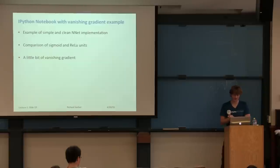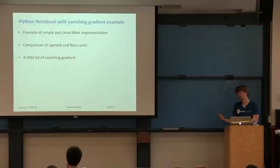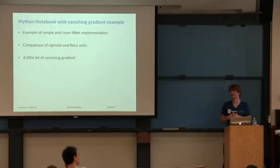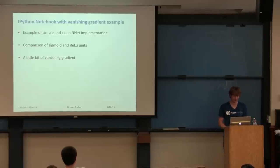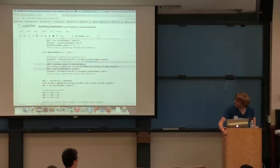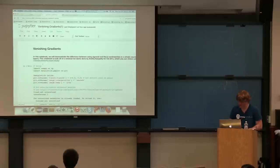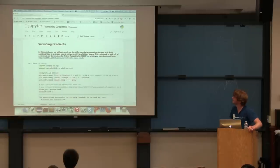To give intuition and bring students up to speed with the first problem set, let's go through a simple clean neural network implementation — a standard neural network with two hidden layers. Even standard deep networks have the vanishing gradient problem, though less often the exploding gradient problem. We'll also compare sigmoids versus ReLU units, which is especially useful for recurrent neural networks. This IPython notebook will be shared on the website.